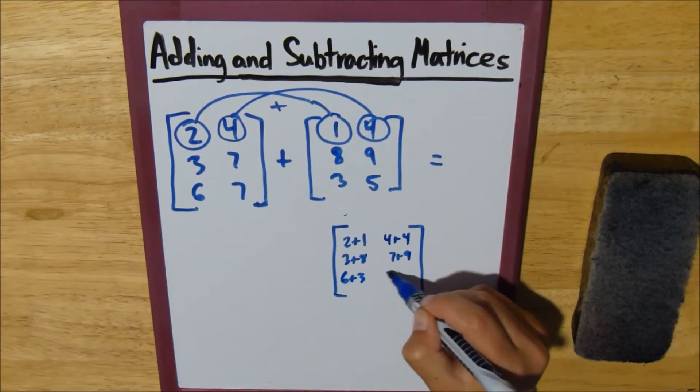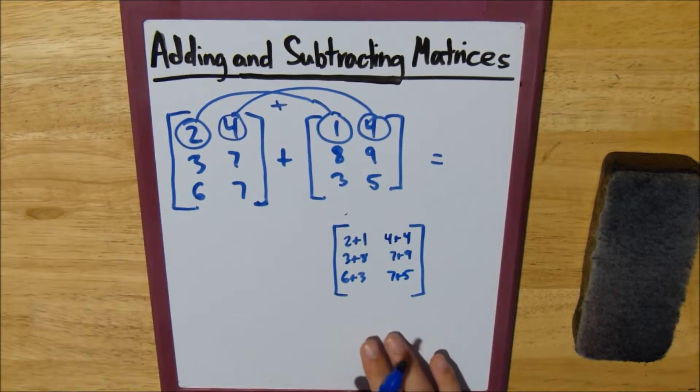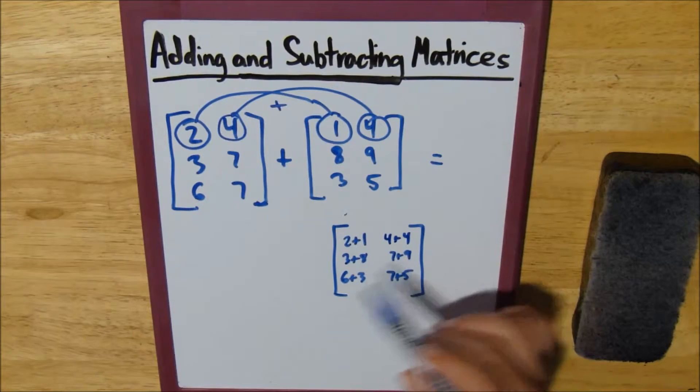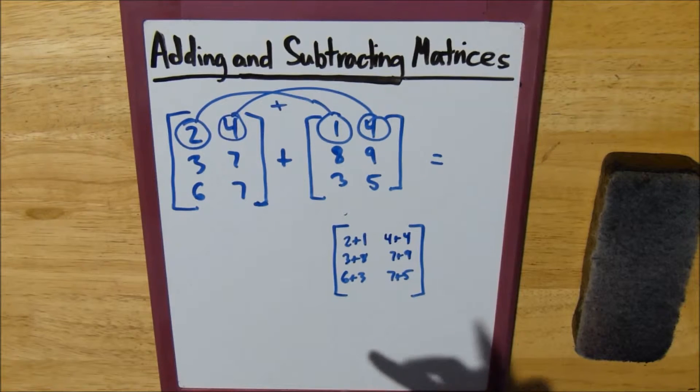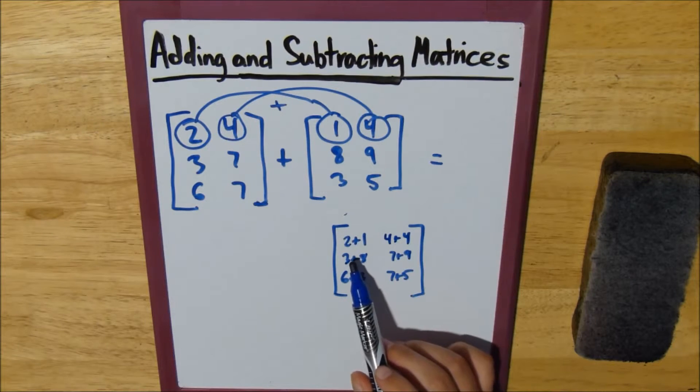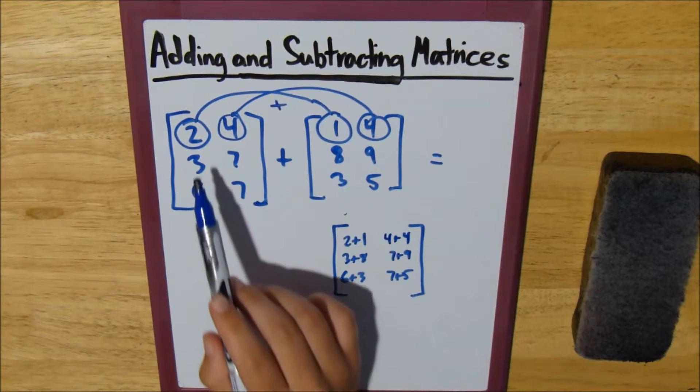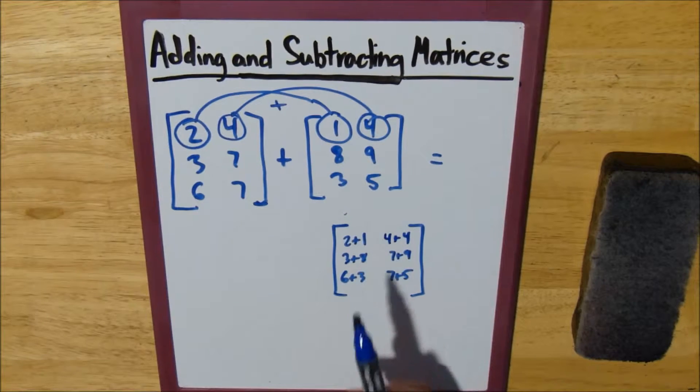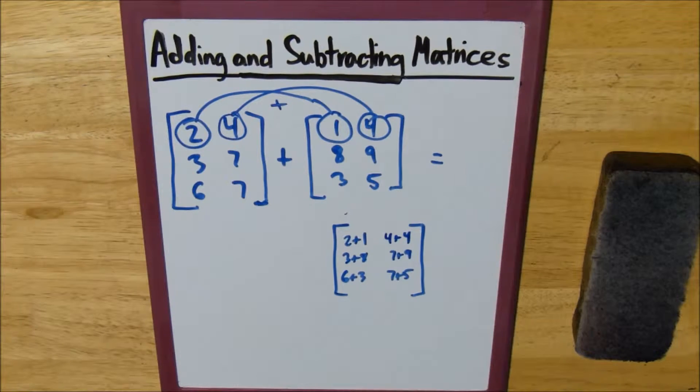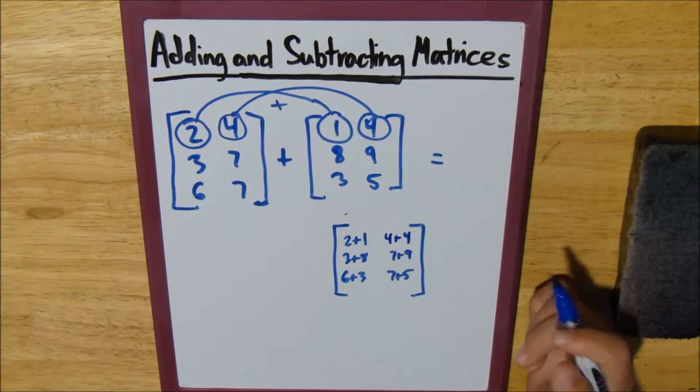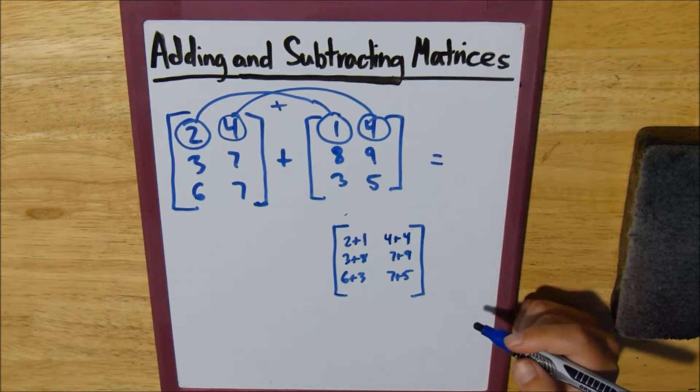So I find it easier to write out what you're adding inside the matrix and then rewrite it as you solve for these numbers, just because sometimes I may add the wrong thing. But this is a more focused way to do it.